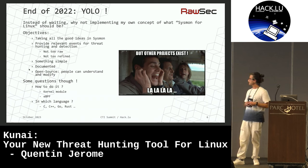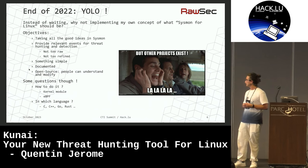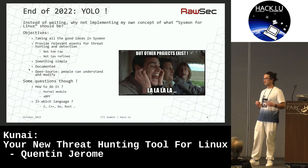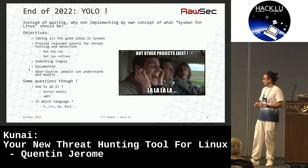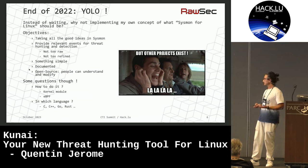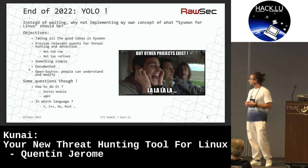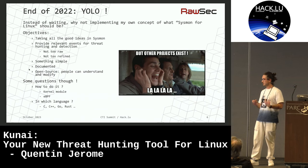And these were my objectives at that moment. First, take the good ideas behind Sysmon because of course they are good ideas, not only bad. Provide relevant events for threat hunting and threat detection — which means not too raw, like syscall information, because for me it needs a bit more refinement. And not too refined either, because when they are too refined, you get some events but you don't really understand why they got generated. So we have to find a good balance between those two. I want something simple, documented, because I think Sysmon sometimes lacks documentation and requires a lot of trial and error, and that's what I don't want.